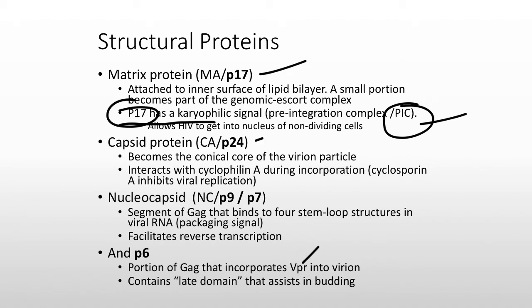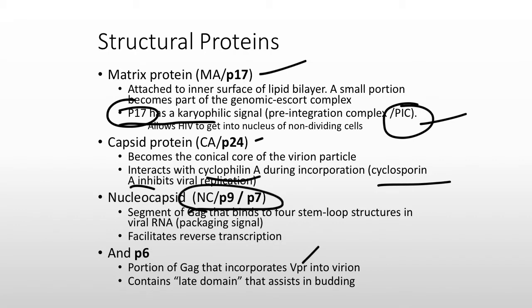P24 is the conical core of the virion. It interacts with cyclophilin A and can be inhibited by cyclosporin A — mostly lab-type information but potentially clinically important. The P7 or P9 segment is what actually binds to the two pieces of viral RNA before it is cleaved. Afterwards, P7 stays attached to the viral RNA and helps initiate reverse transcription.